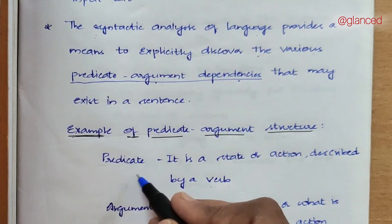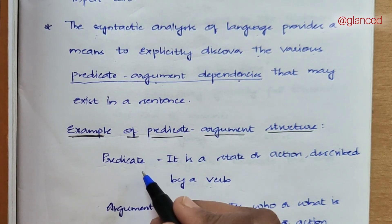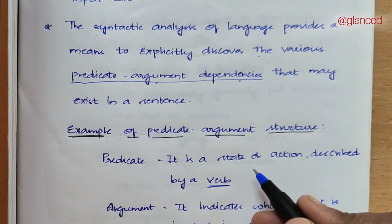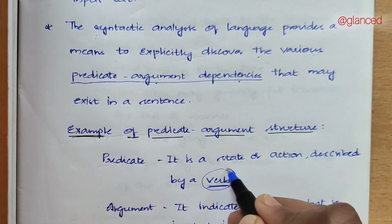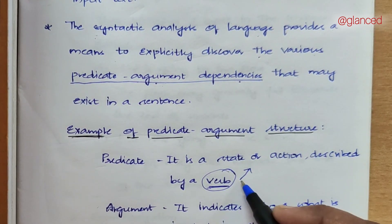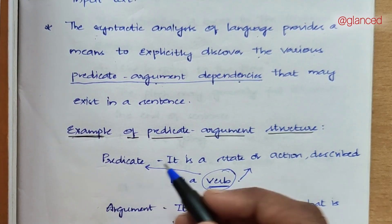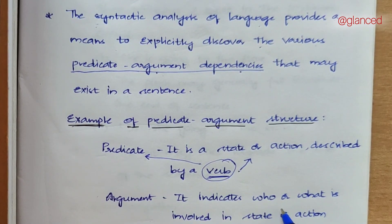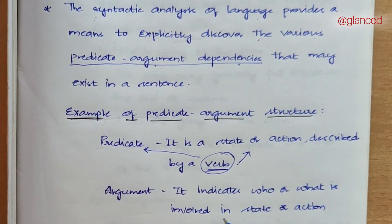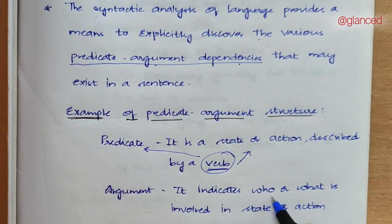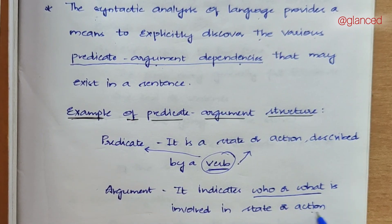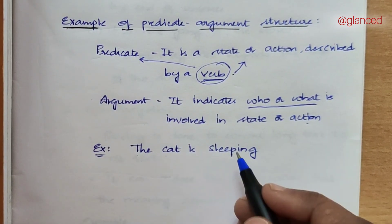So what is a predicate? A predicate is nothing but a verb in a sentence — a word that describes a state or action. The central action of a sentence is the verb, and that verb is the predicate. And what is an argument? An argument is the object involved in that particular action — what performs or is involved in that action or state.